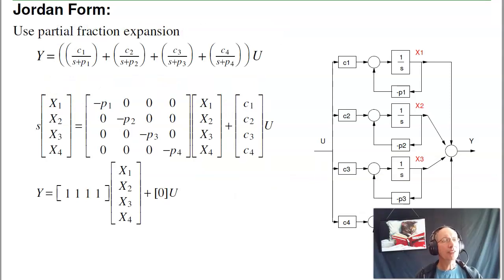The last form has the best numerical properties, and it's also the hardest to get to, is Jordan form. If I do a partial fraction expansion, I'm going to get four terms. I can implement that as four systems added together in parallel. In that case, the state space model, the A matrix is diagonal. You can't get any better numerical properties than a diagonal system.